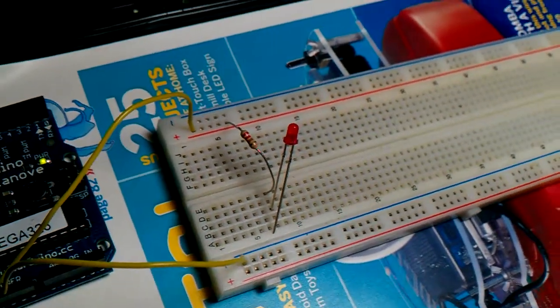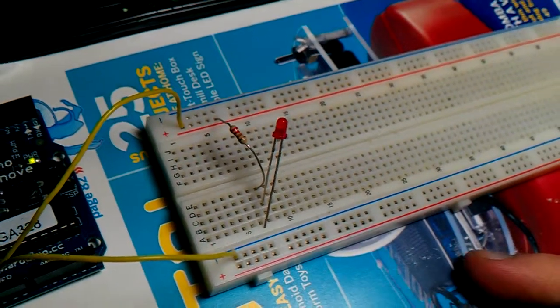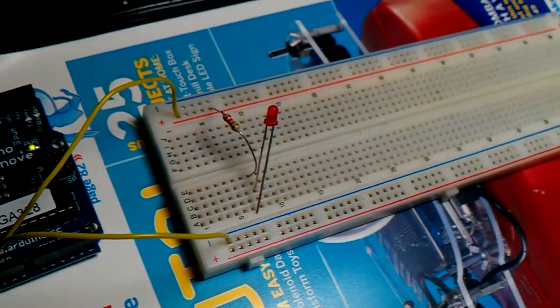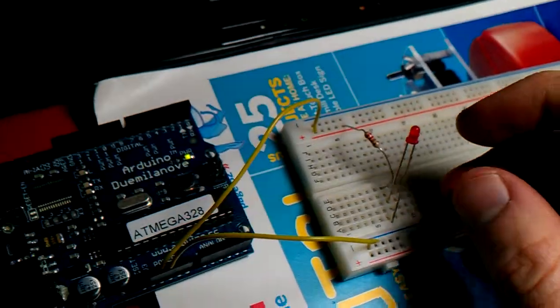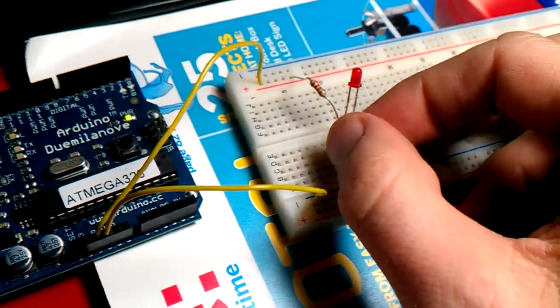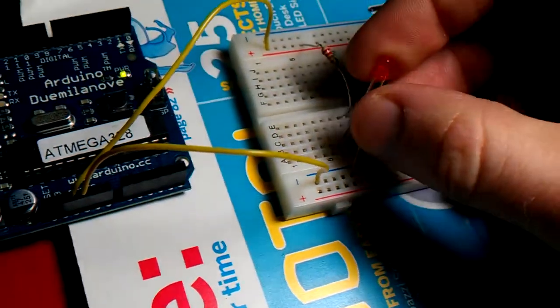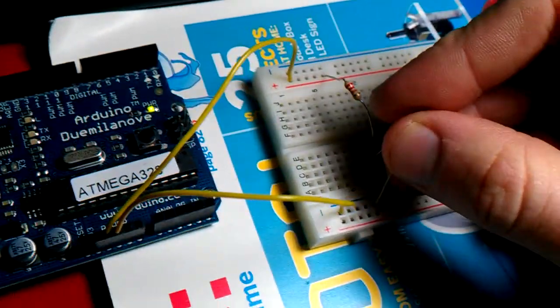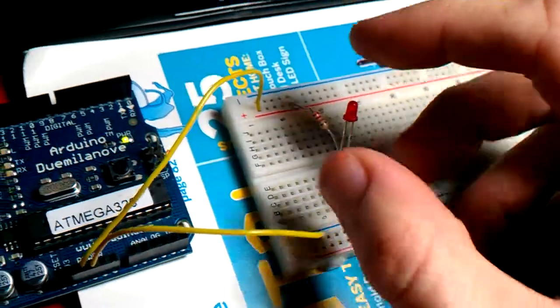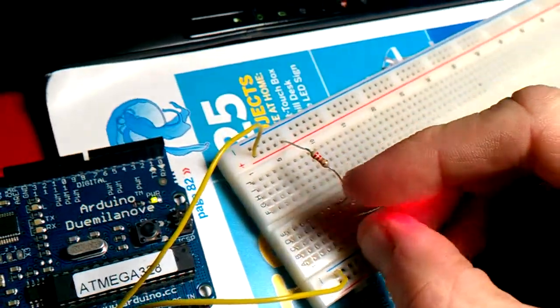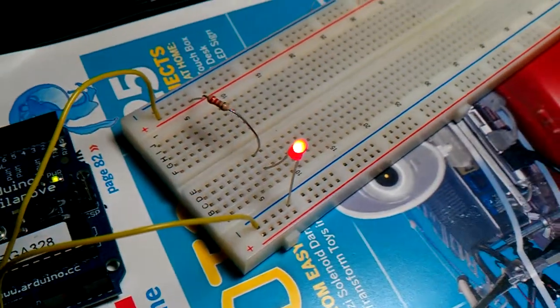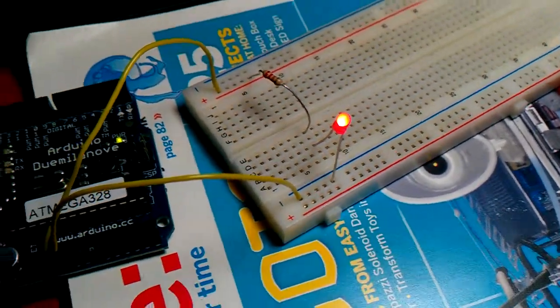You can learn all about breadboarding by reading some sites online for basic breadboarding or the Arduino book I gave you. Anyways, let's take the other end of the cathode and we're going to plug that directly into the negative power rail. And you'll see as I do this, our LED lights up.